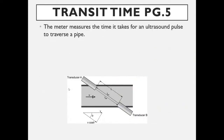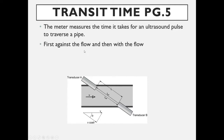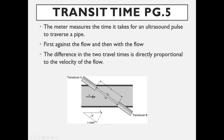Transit time is the second technology. This meter measures the time it takes for an ultrasonic pulse to traverse the pipe — it crosses the full pipe diameter rather than reflecting off particles. The signal travels against the flow and then with the flow. The difference in the two travel times is directly proportional to the velocity of the flow.